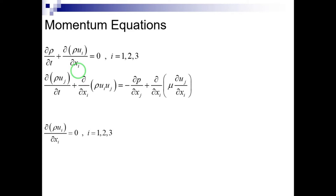In incompressible flows, due to the unrelatedness of density changes to pressure, a pressure equation is obtained as a constraint on solving the momentum equations to satisfy the continuity equation. This pressure equation is obtained indirectly through the continuity equation.